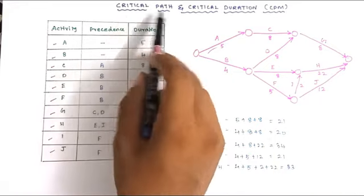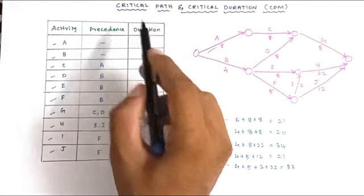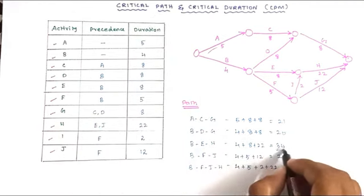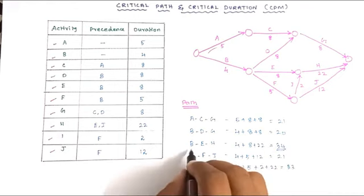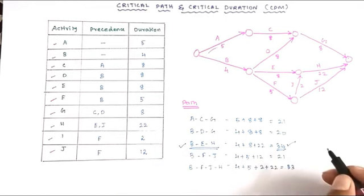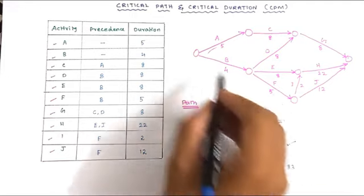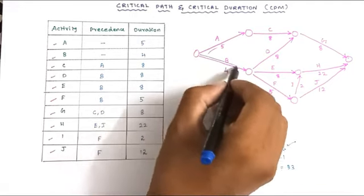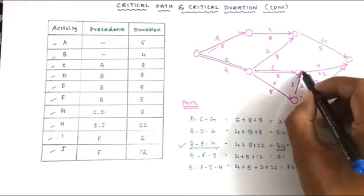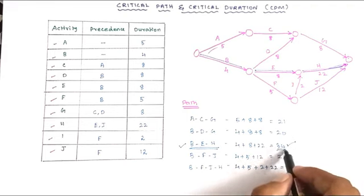As we defined, the path having the longest duration is called the critical path. The longest duration is 34, and the corresponding path is B–E–H. So B–E–H is the critical path and the critical duration is 34. This is the critical path method. We highlight B–E–H as the critical path.